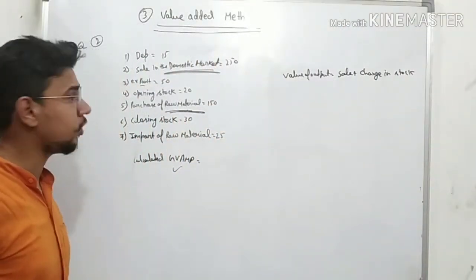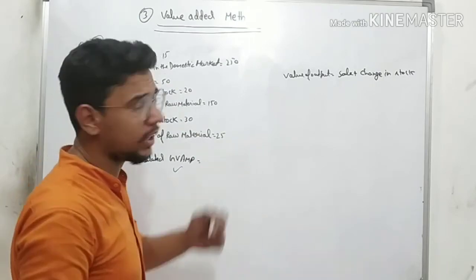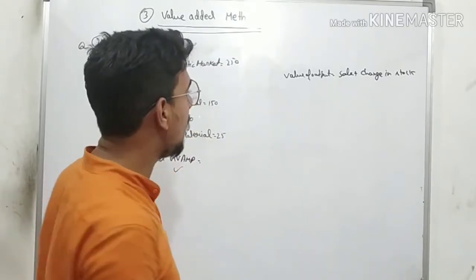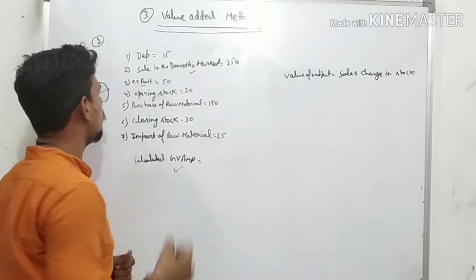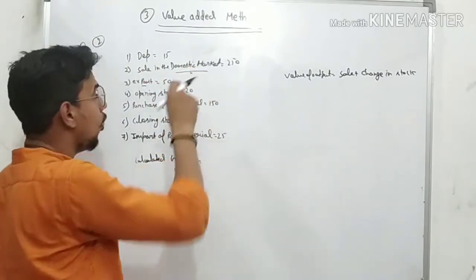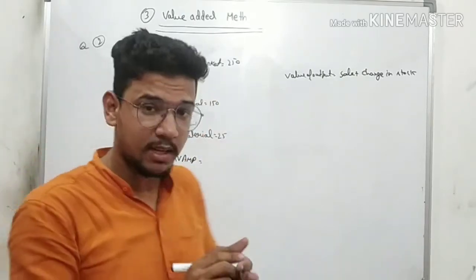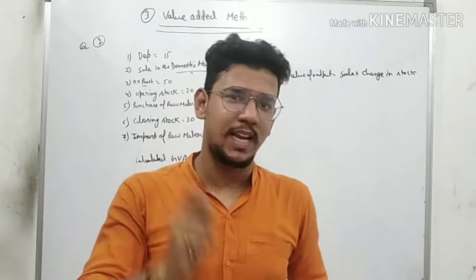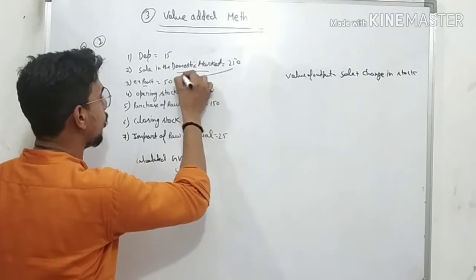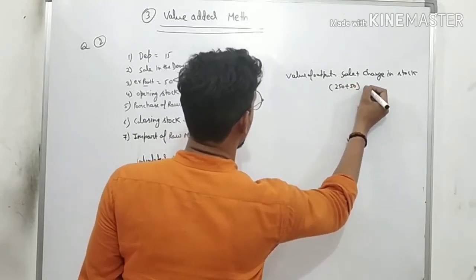Now let's do the second question. You need to calculate GVMP. First, find Value of Output — two formulas available: price × quantity, or sales plus change in stock. We'll use sales and change in stock since sales are given. Sales include domestic market sales and exports, so total sales = domestic sales (200) + exports (50).